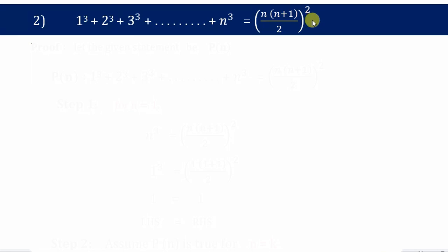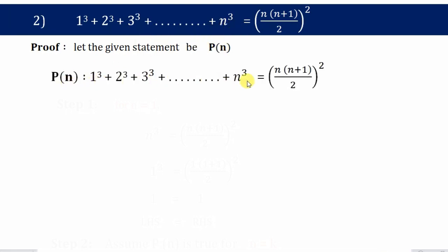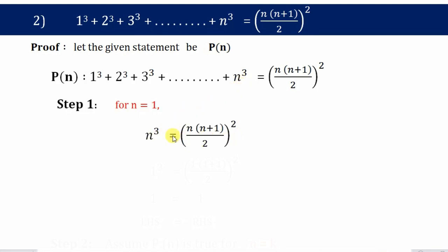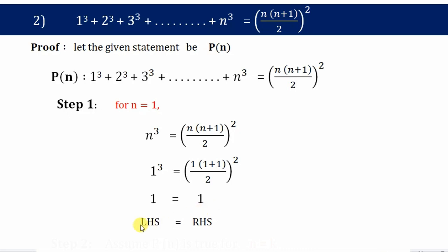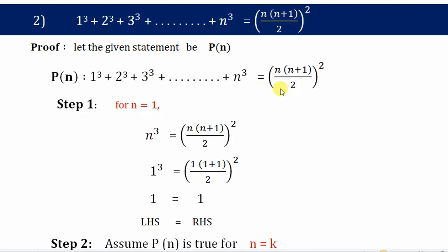First, let the given statement be P(n). We take the n term from both sides of the equation and replace n by 1. All the n's are replaced by 1, and what we ultimately get is 1 equals 1 — so left hand side equals right hand side. In step 1 we have proved that the given statement P(n) is true for the first natural number.